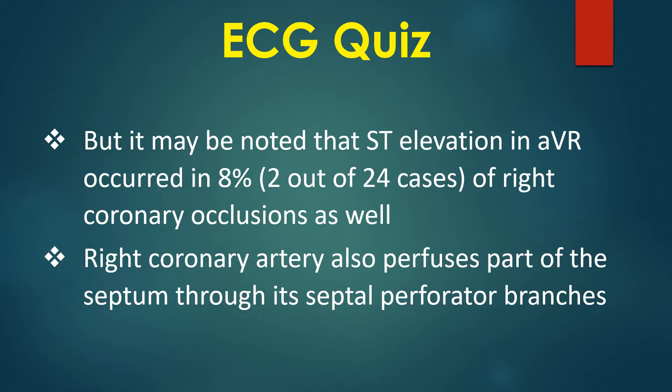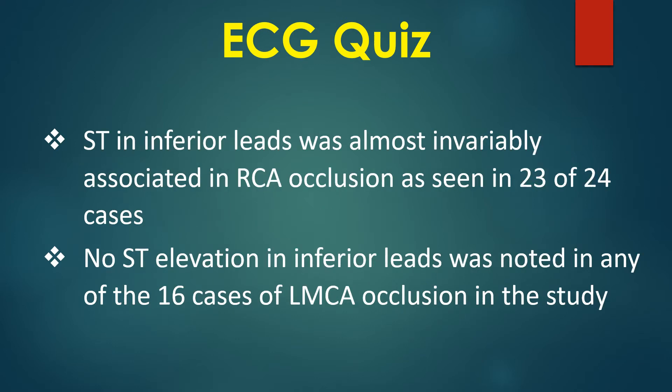It may be noted that ST elevation in AVR occurred in 8% — that is 2 out of 24 cases — of right coronary artery occlusions as well. The right coronary artery also perfuses part of the septum through its septal perforator branches. ST elevation in inferior leads was almost invariably associated with RCA occlusion, as seen in 23 of the 24 cases. No ST elevation in inferior leads was noted in any of the 16 cases of LMC occlusion in this study.